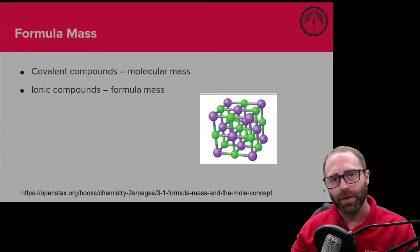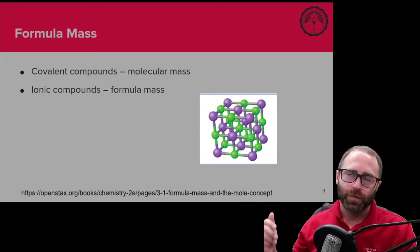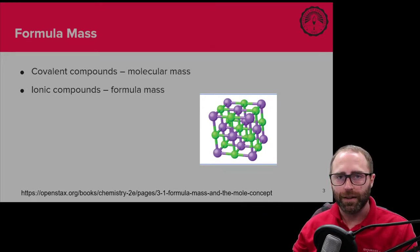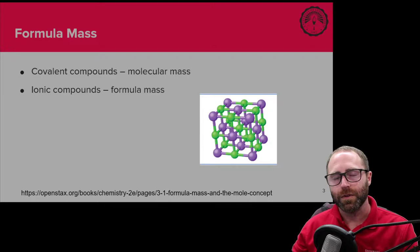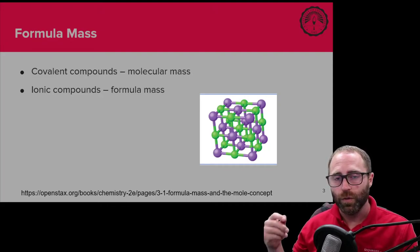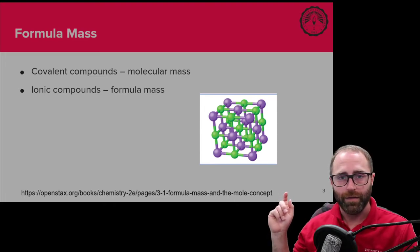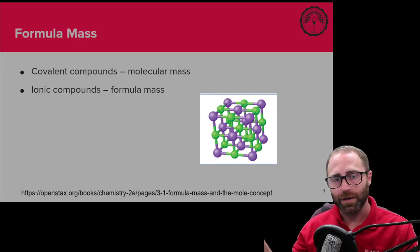For some nomenclature: for covalent compounds, we typically refer to the formula mass as the molecular mass, because with covalent compounds they do exist as one discrete unit. You'll have a certain number of atoms in a very specific arrangement — that will be your molecule. The next molecule will have that same number of atoms and the same arrangement and will be its own individual molecule.